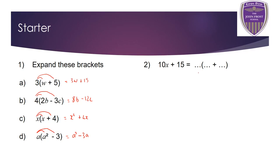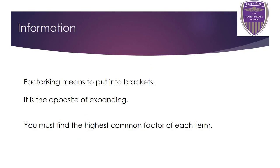On the final starter question, you needed to find the value outside the brackets and the two values inside. Outside the bracket, hopefully you put 5, because 5 goes into 10 and 5 goes into 15. Inside the brackets: 5 times 2x gives 10x, and 5 times 3 gives 15. What we've done there is something called factorizing, and that is really what I want us to focus on in this lesson today — how to factorize algebraic expressions.